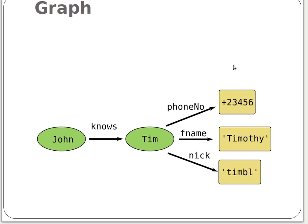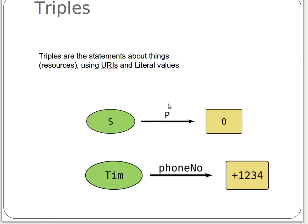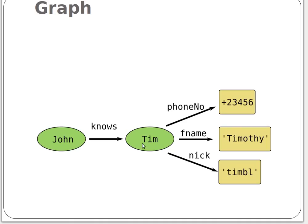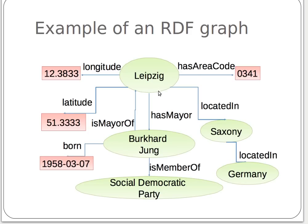Remember, all triples are graphs. So if we have many triples about Tim — phone number, title, address, job title — we can represent that as node-edge-node structures. If we have another person called John who knows Tim, so we have a property 'knows' between them — John has friend Tim, or John knows Tim — that's another node and another edge in the graph. So: vertex, edge, vertex, edge, vertex and so on. I hope that makes sense if you're familiar with mathematical graphs.